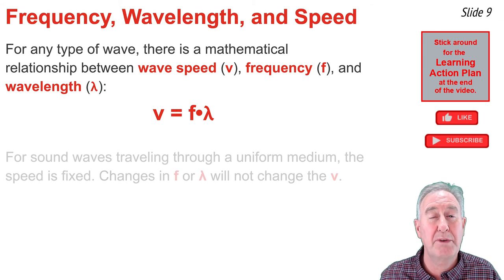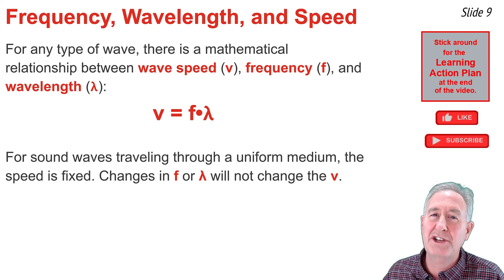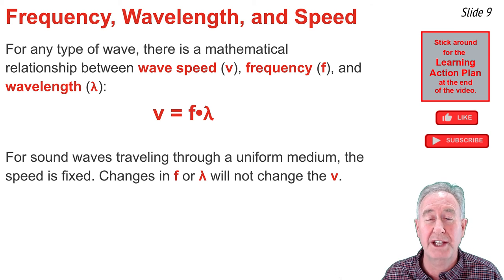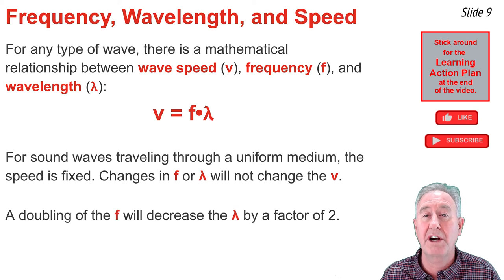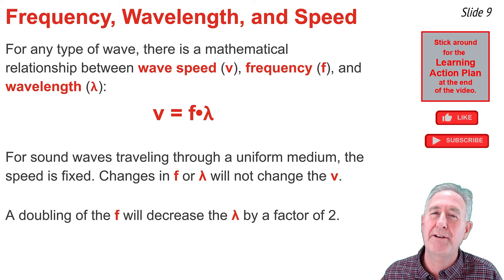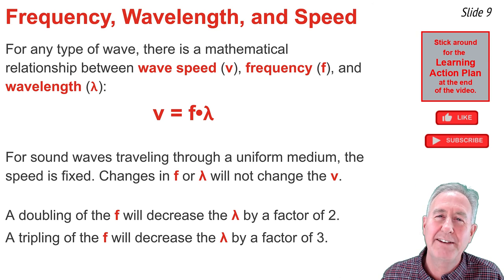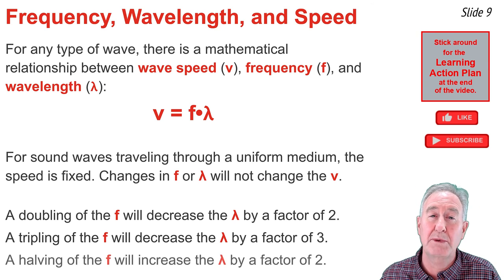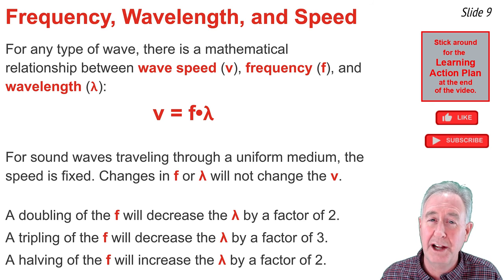For a wave traveling through a uniform medium, the left side of the equation V = fλ is a constant value. So a variation in frequency does not affect the speed but instead affects the wavelength. For instance, a doubling of the frequency would cause the wavelength to decrease by a factor of 2 while speed remains constant. A tripling of the frequency would cause the wavelength to decrease by a factor of 3. And a halving of the frequency would cause the wavelength to increase by a factor of 2. Frequency and wavelength are inversely related while speed remains constant within a uniform medium.